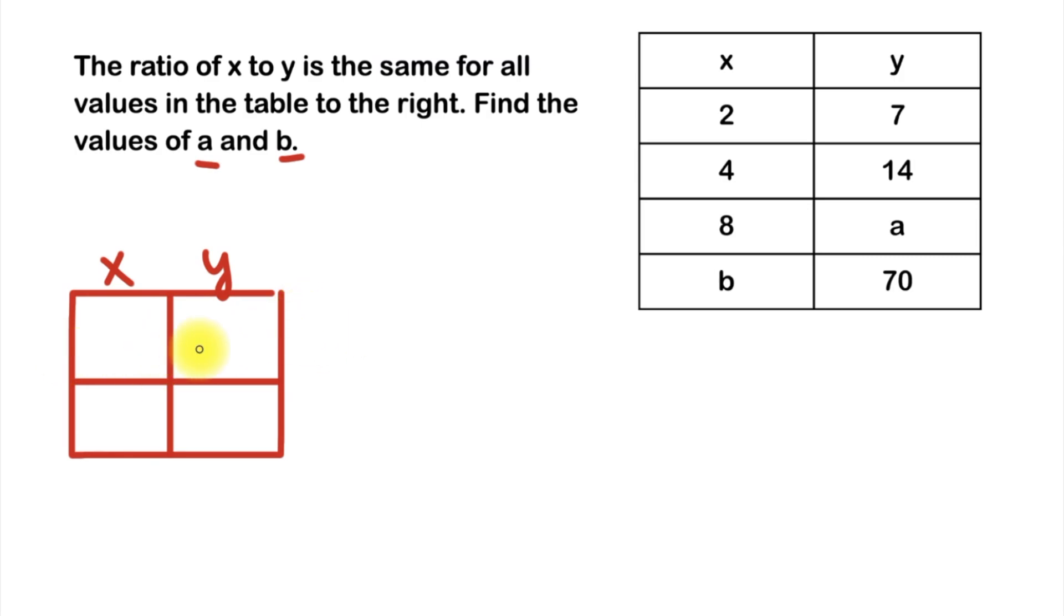This first row here is for any given ratios that we have, that means we'll have both numbers in that row. We have two rows that we have both values - 2 to 7 and 4 to 14. I prefer using the ratio that's the smallest. The smaller the numbers are, the easier the math should be. So in x I'll put 2 and y I'll put 7.